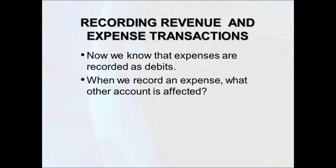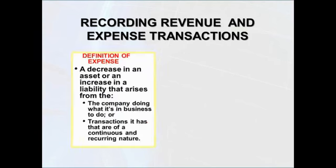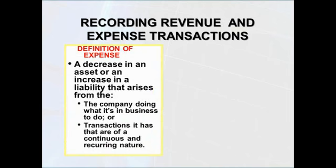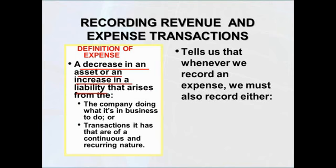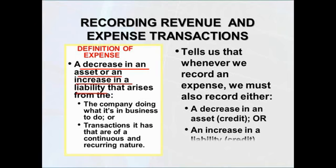Now we know that expenses are recorded as debits. But when we record an expense, what other account is going to be affected? Looking at the definition of an expense — a decrease in an asset or an increase in a liability that arises from our ongoing recurring activities — that tells us whenever we record an expense, we're also either going to record a decrease in some asset (which would be a credit) or an increase in some liability (which would also be recorded as a credit).